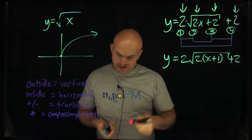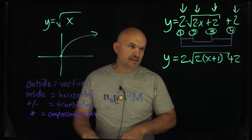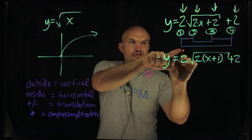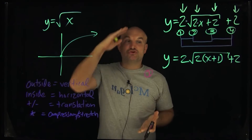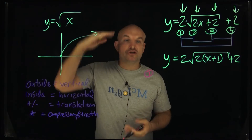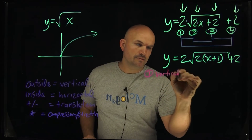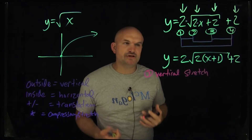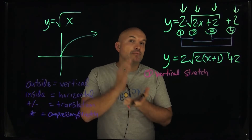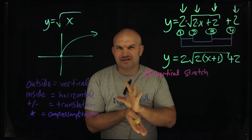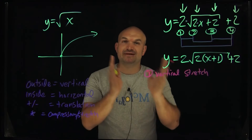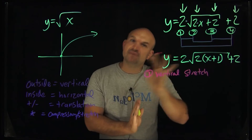Now let's identify each transformation. Number 1 is the 2 outside the function — that is going to be a vertical stretch by a factor of 2. Whenever the number outside the function is larger than 1, it is a vertical stretch. If it were between 0 and 1, it would be a vertical compression — you could think of that as a fraction or division.